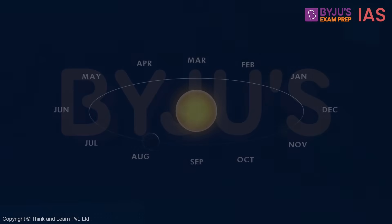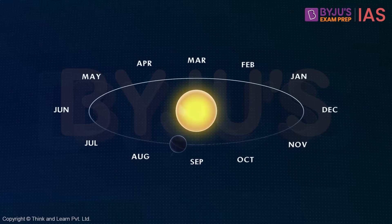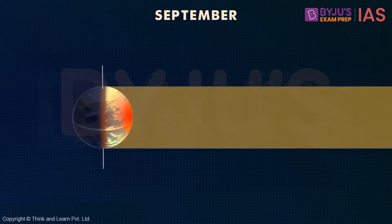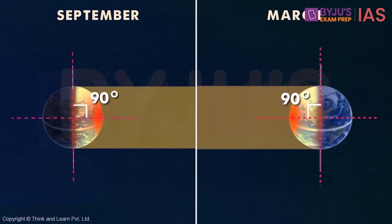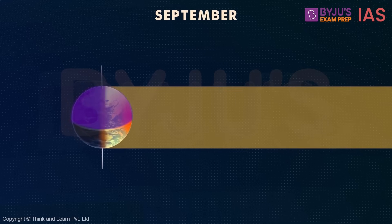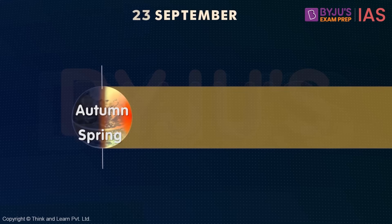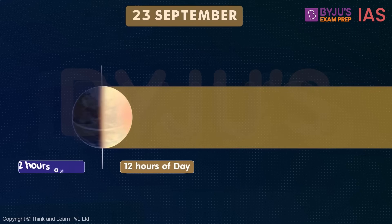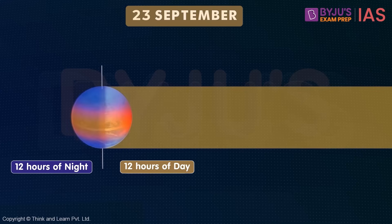As the days pass, the earth continues its journey, and now it's around the middle of September. The sun's rays are hitting the earth's axis again at 90 degrees, just like the month of March. Around this time, the northern hemisphere experiences the autumn season and the southern hemisphere experiences the spring season. On the 23rd of September, the earth will experience 12 hours of daylight and 12 hours of night. This is again called an equinox.